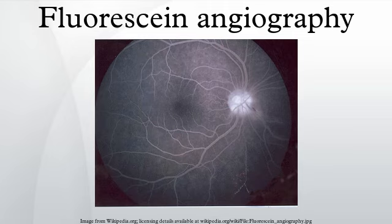Intravenous fluorescein angiography, or fluorescent angiography, is a technique for examining the circulation of the retina and choroid using a fluorescent dye and a specialized camera. It involves injection of sodium fluorescein into the systemic circulation, and then an angiogram is obtained by photographing the fluorescence emitted after illumination of the retina with blue light at a wavelength of 419 nanometers.